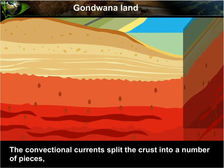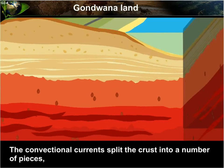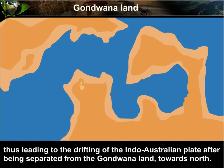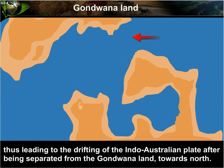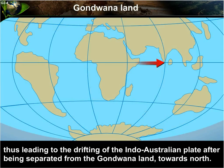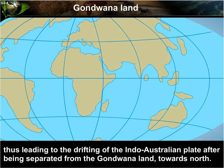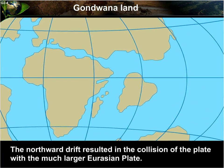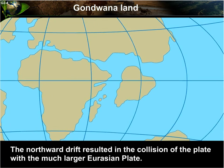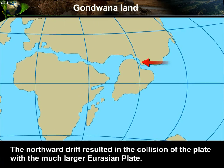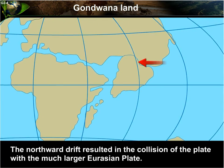This led to the drifting of the Indo-Australian plate after being separated from Gondwana land towards the north. The northward drift resulted in the collision of the plate with the much larger Eurasian plate.